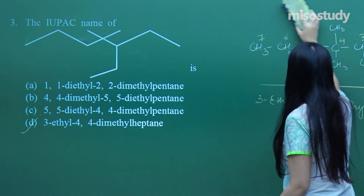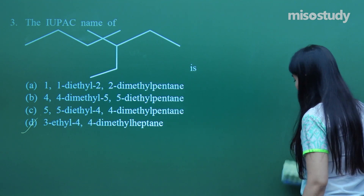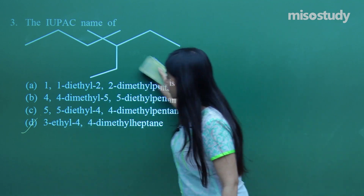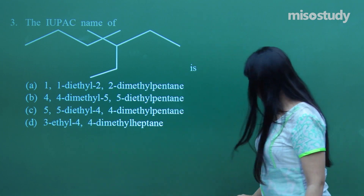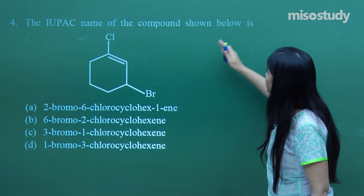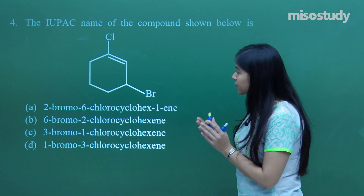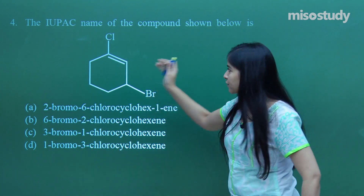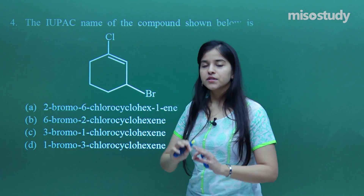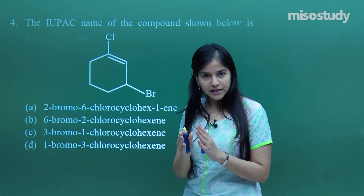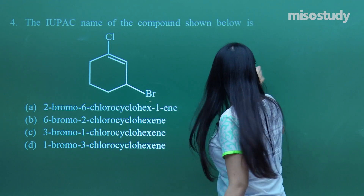Now let's move on to the next question. IUPAC naming has always been a simple task but you need proper knowledge of the rules involved. The IUPAC name of the compound shown — there is a ring-like structure, a cyclic compound. I have a chlorine here and a bromine here — both are substituents. Now on the basis of alphabetical order I may go for bromine, but you need to know the preference order.